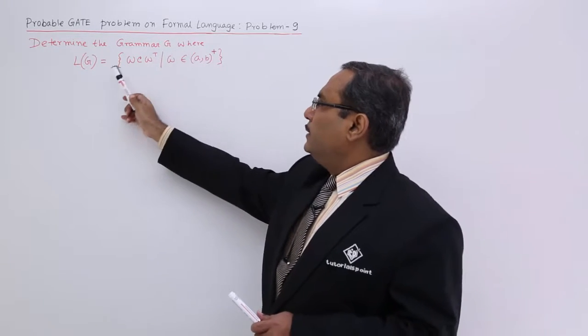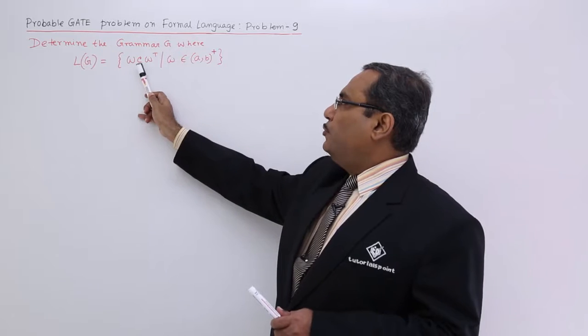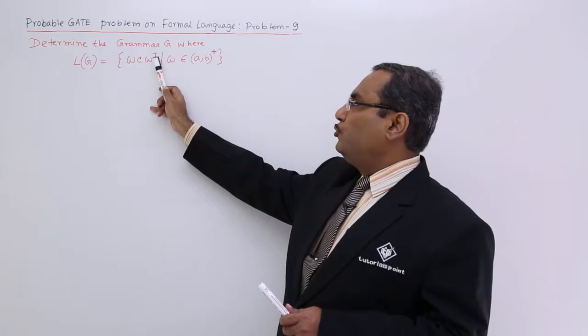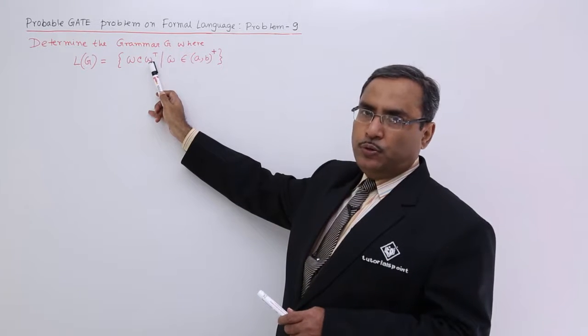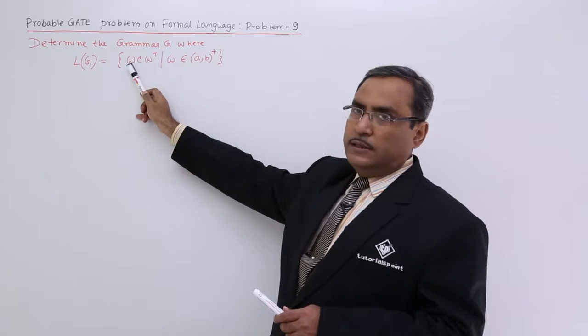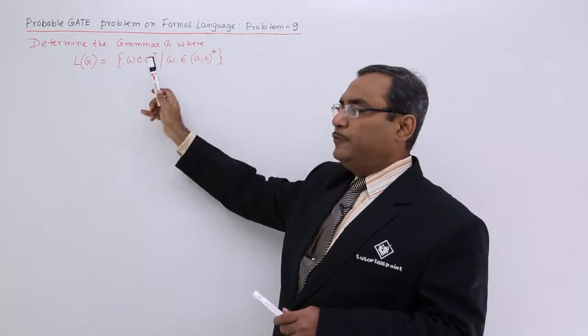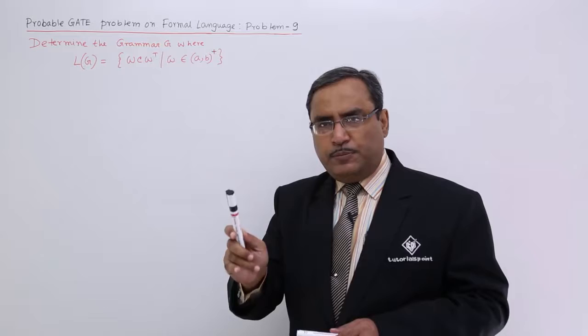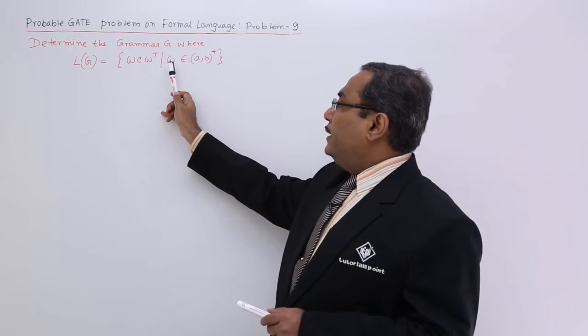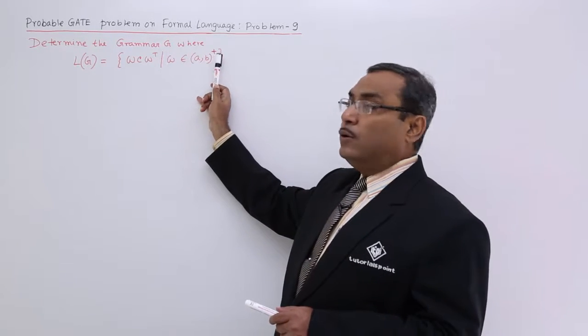Determine the grammar G, where L of G is equal to W C W T. We know that W T means transpose of W. That means, whatever the symbols are there in W, W of T will be having the same symbol but in the reverse order, where W belongs to A, B whole plus.